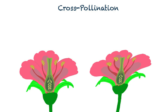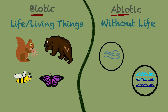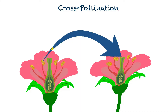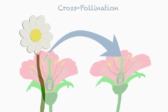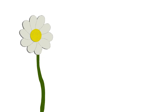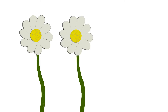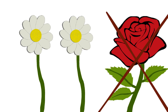Now, cross-pollination mainly requires external pollinating agents. The transfer of pollen happens from the anther of one flower to the stigma of another flower of the same species. What do we mean by same species? For example, a pollen from a daisy can pollinate only another daisy. It cannot cross-pollinate with a rose.